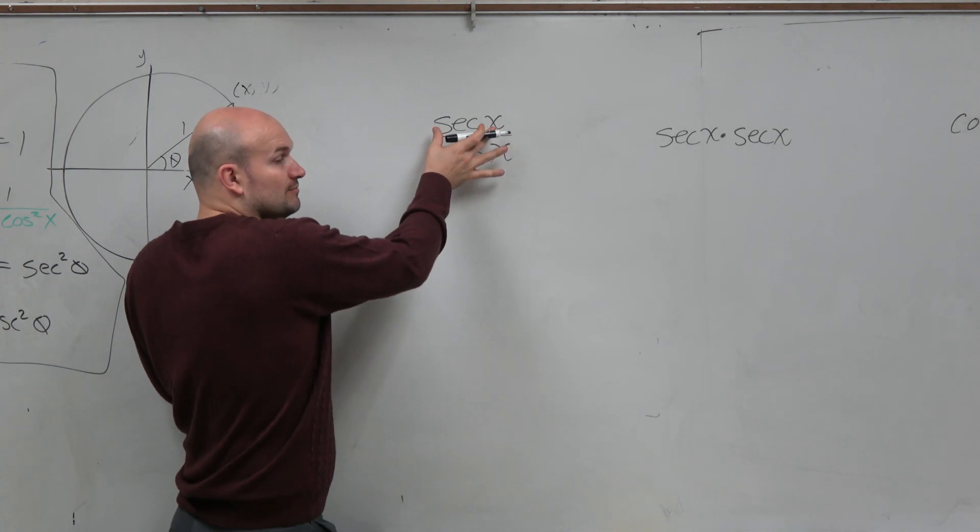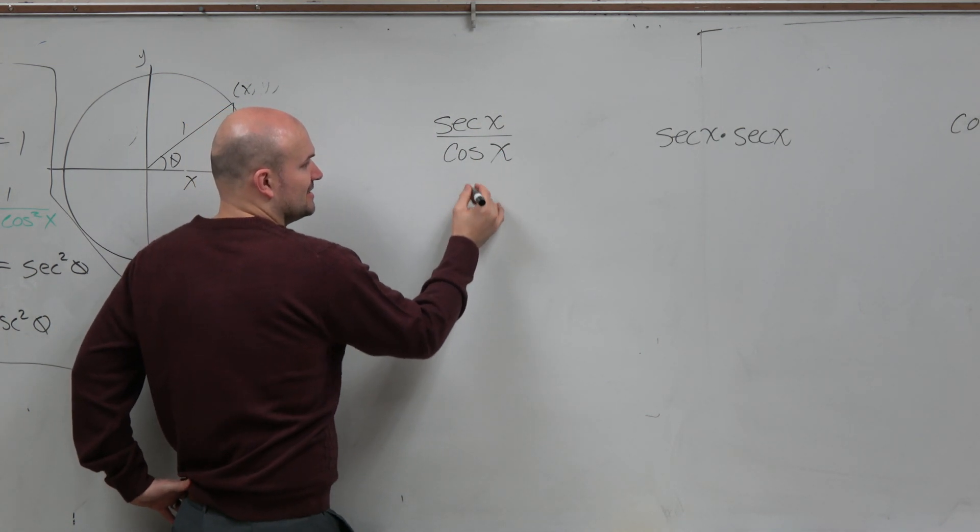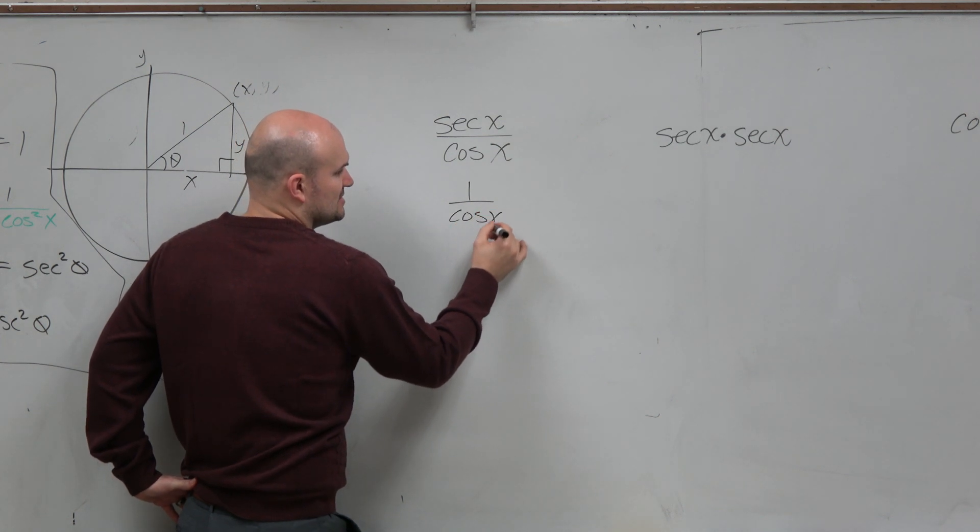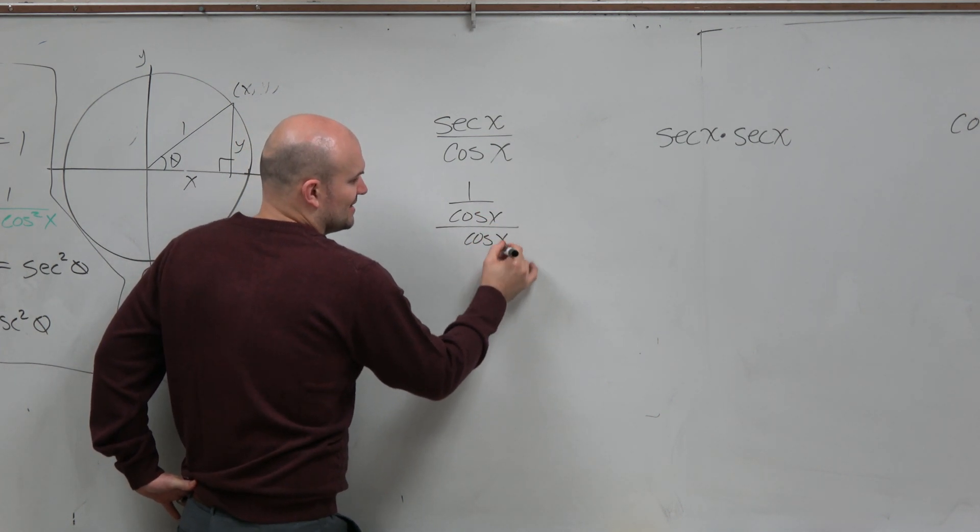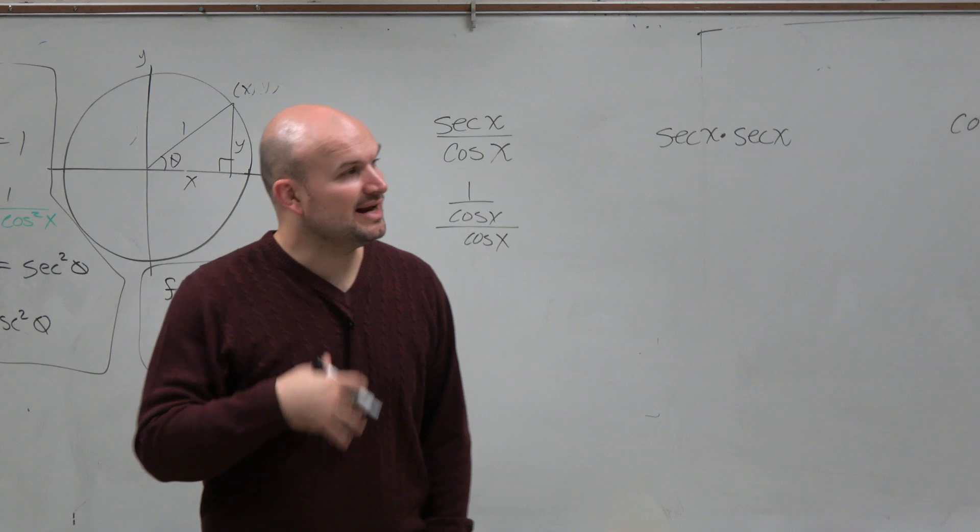So again, we have a couple, like one thing we know for secant is we can rewrite this as 1 over cosine of x over cosine of x.